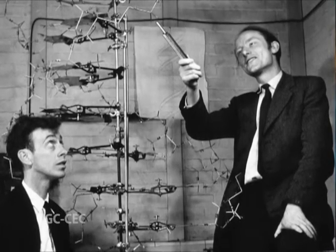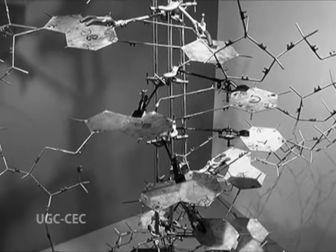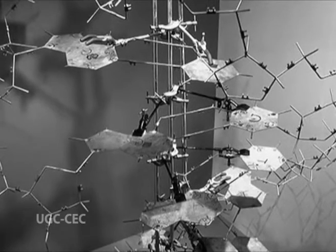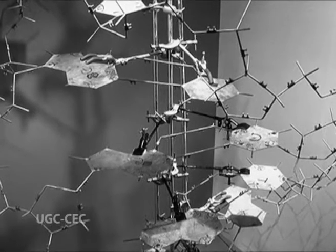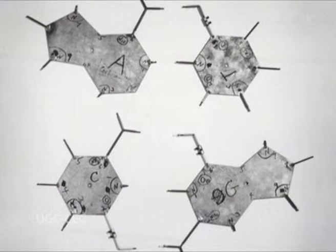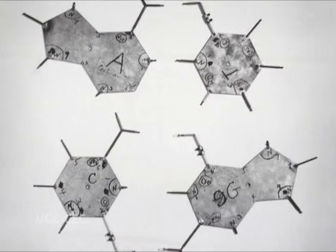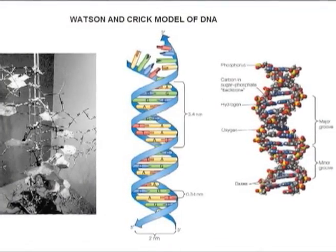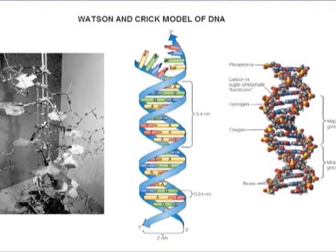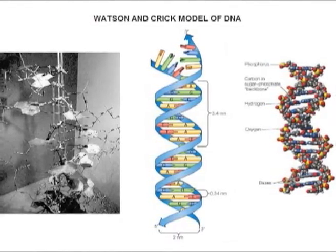Crick added Chargaff's findings to the model, so that matching base pairs interlocked in the middle of the double helix to keep the distance between the chains constant. Watson and Crick showed that each strand of the DNA molecule was a template for the other. During cell division, the two strands separate, and on each strand a new complementary half is built just like the one before. This way, DNA can reproduce itself without changing its structure, except for occasional errors or mutations. The structure so perfectly fit the experimental data that it was almost immediately accepted. DNA's discovery has been called the most important biological work of the last 100 years.